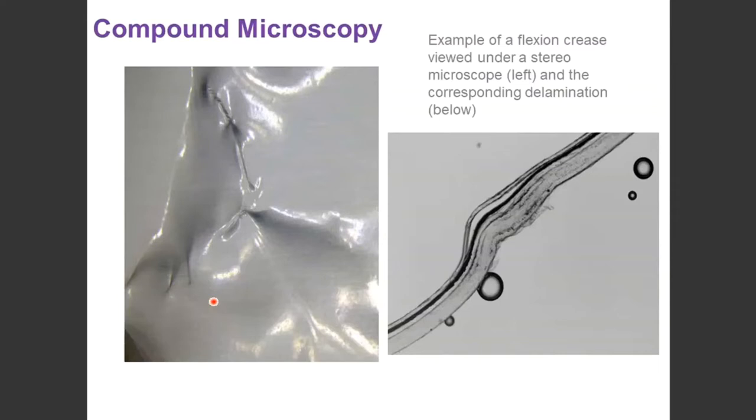But when we section that, cross-section through different areas of that, we can then view it under the compound microscope. What we can see here is that we have some form of delamination occurring, so between our optically dense layer and our outer polymer layer.